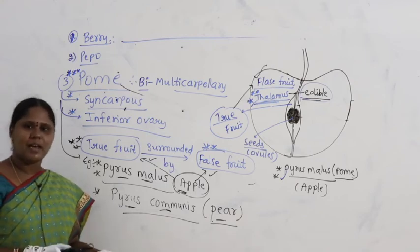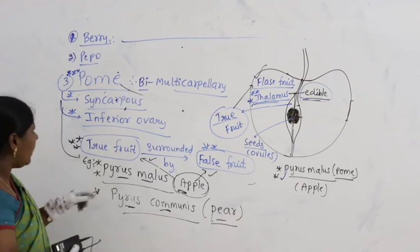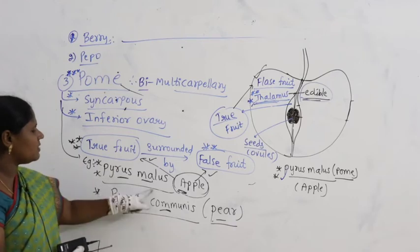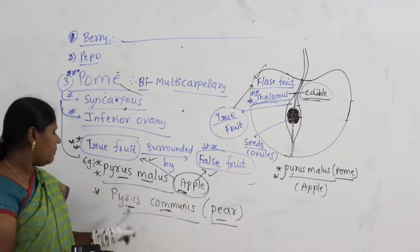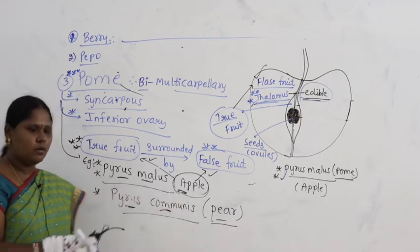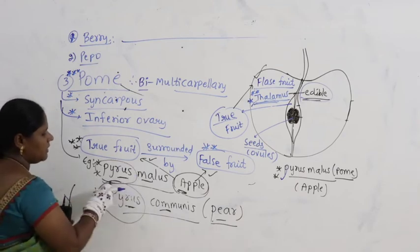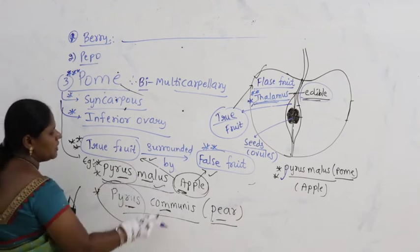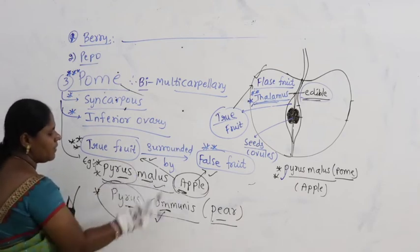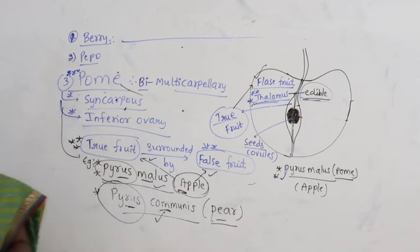In apple, pear, and strawberry, the thalamus is edible. Examples: Pyrus malus — apple — and Pyrus communis — pear. In both, the genus name is the same but the species name is different. Malus gives apple, communis gives pear.